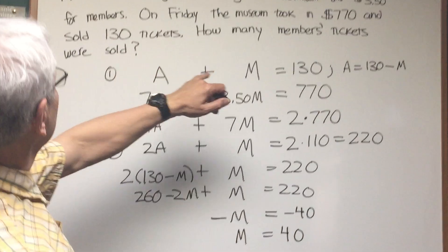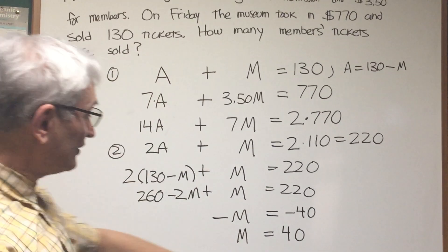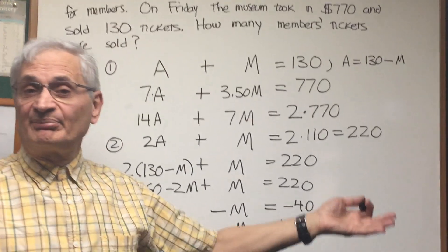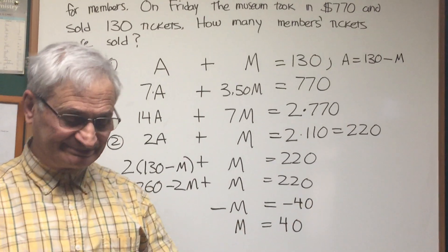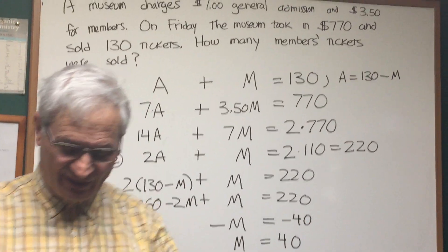Therefore, M is equal to 40. How many members' tickets were sold? 40. That's the answer.